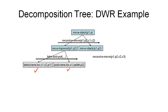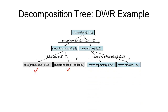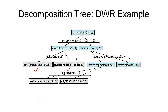We choose recursive move again with different containers. Refining this task gives move-topmost as the first subtask, then move-stack again. We go through the loop: the first subtask is move-topmost, we use a take-and-put method to refine it into two primitive tasks, find actions for both, and that leaves the next move-stack task as the new first task in our network.